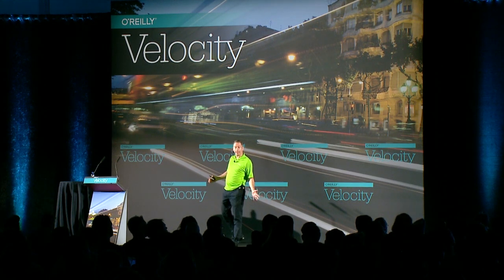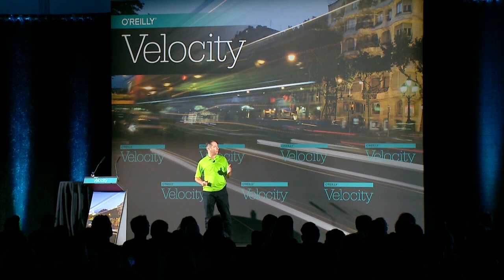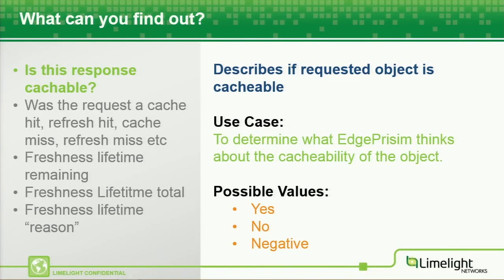So what can you find out? Well, most importantly and foremost, is it a cacheable response? Is the thing I'm asking for cached in the CDN? Yes, maybe, no — or it might be negatively cached. It could be a 404 or some negative response from the origin which we are also caching. This helps you know what our software, Edge Prism, our caching software, thinks about the cacheability of the object you've requested.